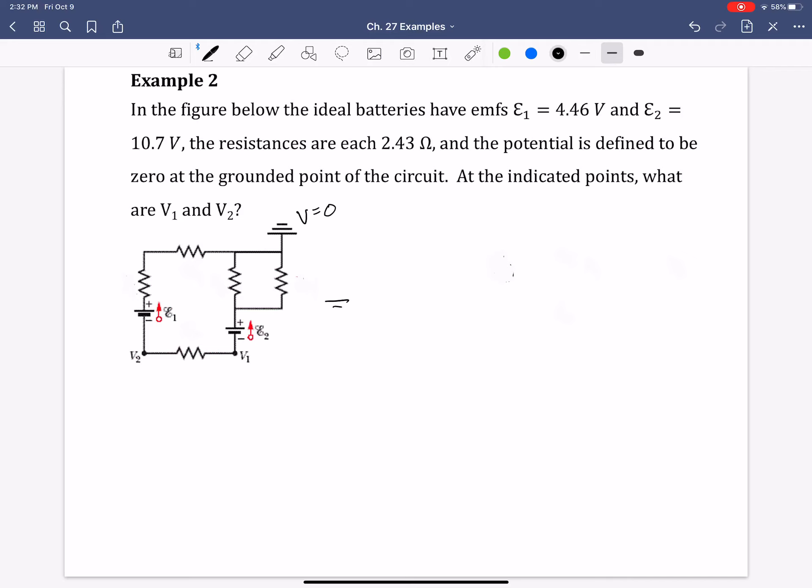So the first step I would suggest doing is to redraw this circuit, but redraw it a little more simply, meaning let's find the equivalent resistance for those two resistors there. I'll call them R4 and R5. That means I'll call this one R3, R2. I know they're the same, but for this purpose, I'll differentiate them.